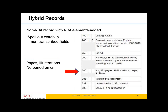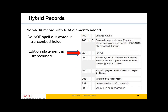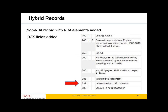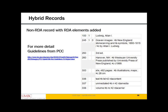Hybrid records are non-RDA records with RDA elements added — this is legal and acceptable. You would spell out words in non-transcribed fields only: pages, illustrations, no period on cm. In transcribed fields, leave abbreviations alone because you're transcribing. Without the book in hand — and you shouldn't make these changes without the book in hand — you wouldn't know that 'third ed.' doesn't appear on the title page. You can also add the 336, 337, and 338 fields. Other changes and additions are covered in guidelines from PCC, which I encourage you to look over.